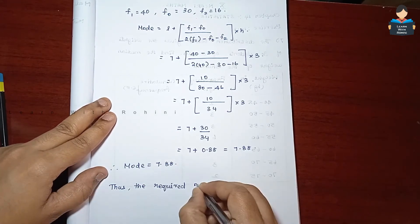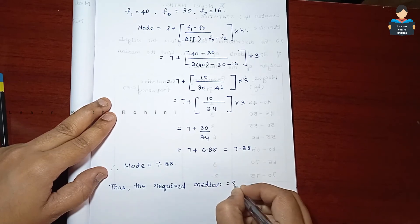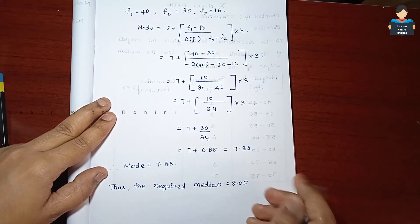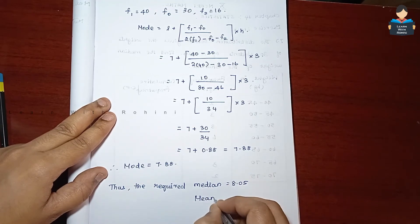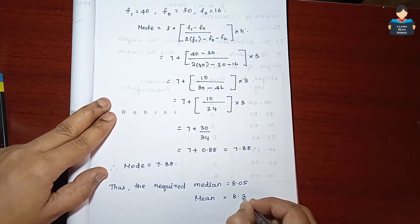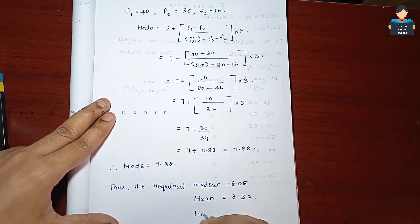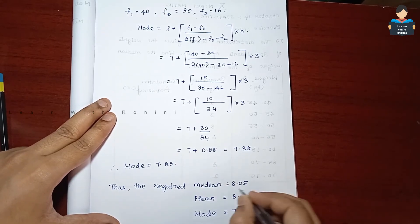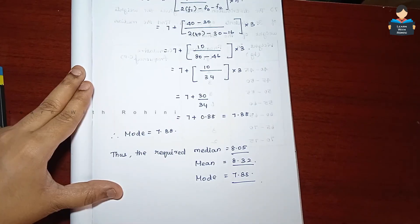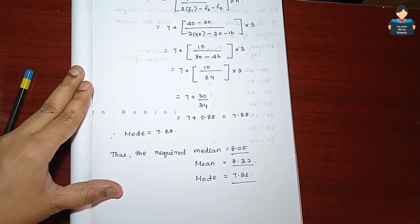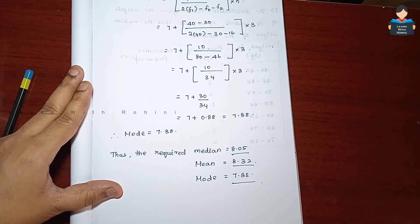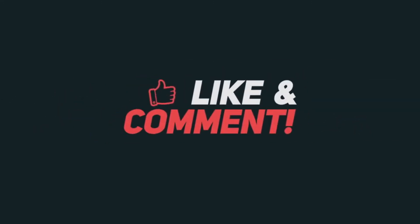Thus the required median equals 8.05, mean equals 8.32, mode equals 7.88. This video is finished. Please like, share, subscribe. Thank you. We'll see you next time.